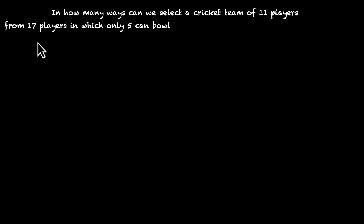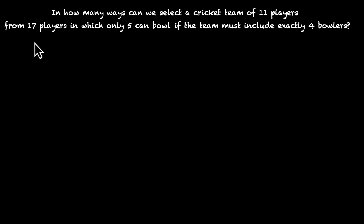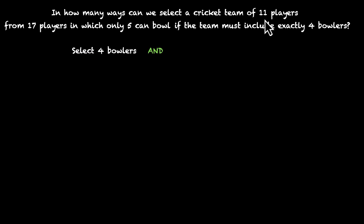One last problem: in how many ways can we select a cricket team of 11 players from 17 players, in which only five can bowl, if the team must include exactly four bowlers? So we have to form a team of 11 players from 17, of which five can bowl — meaning 17 minus 5, so 12 cannot bowl. The condition is that the team must include exactly four bowlers. This means we're doing two tasks: selecting exactly four bowlers, and since we need 11 players total, 11 minus 4 is 7 — so selecting seven others.